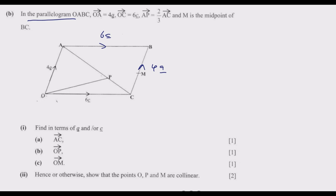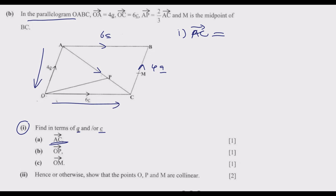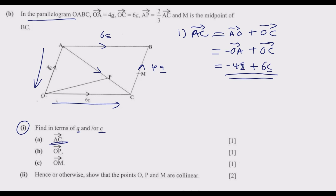Roman numeral one: find vector AC in terms of vector a and vector c. To get from A to C, we move to O first, then from O to C. So vector AC equals vector AO plus vector OC. Vector AO is the inverse of OA, which is negative 4 vector a, plus OC which is 6 vector c. So vector AC equals negative 4a plus 6c.